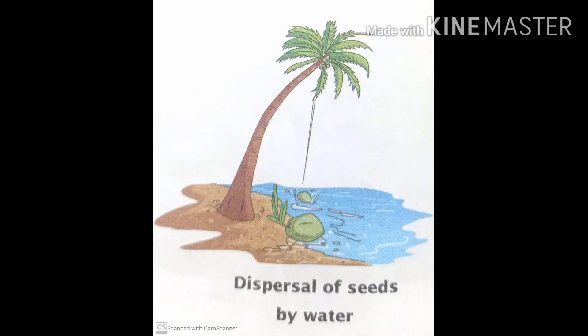Second, by water. These seeds have a structure generally hollow such that they can easily float on water. Once they reach a place where they get the conditions suitable, they germinate, example like coconut, lotus, etc.